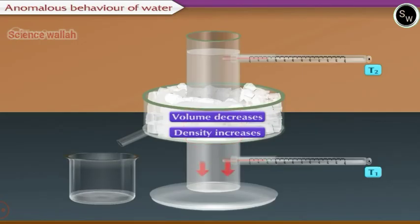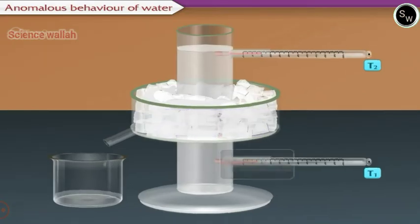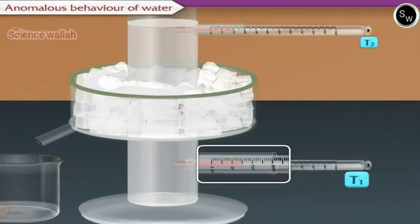The water with higher density moves to the bottom of the cylinder. Therefore, the lower thermometer T1 shows a rapid fall in temperature, and this continues till the temperature of water becomes equal to 4 degrees Celsius.